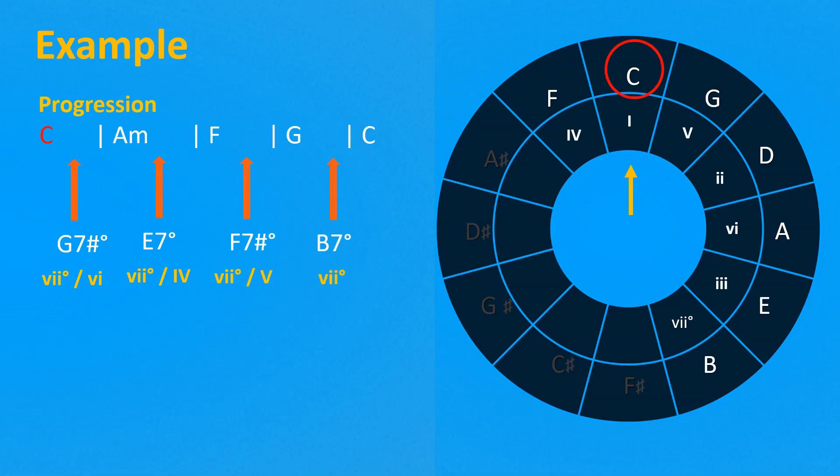So now the progression is C, G sharp 7 diminished, A minor, E7 diminished, F, F sharp 7 diminished, G.